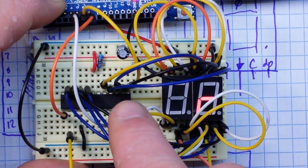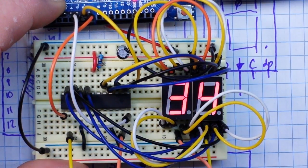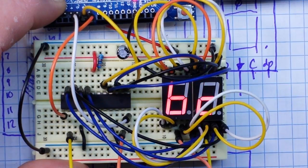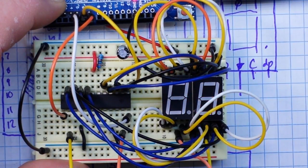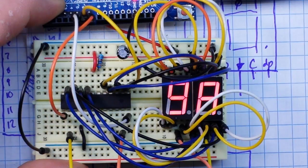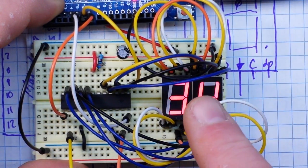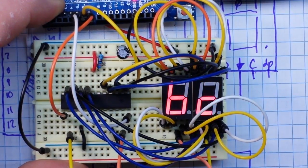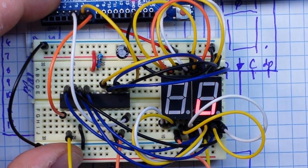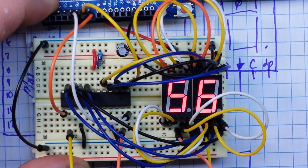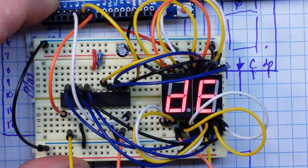But today we're going to look at the hardware solution, and that is the MAX7219 chip. It's an excellent chip. You can control up to eight of these seven segment displays per chip and you can string as many of them together as you like by going from the data out to the data in.